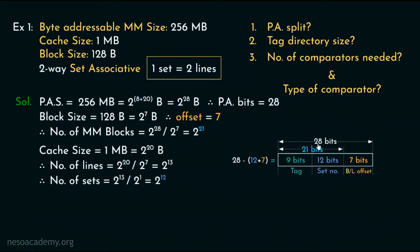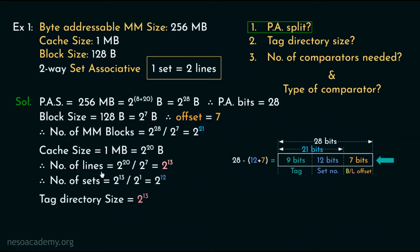From the 28-bit physical address: 7 least significant bits are used for block or line offset, 12 bits for set number, and 9 bits for the tag — that is the physical address split. For the tag directory size, there are 2 to the power 13 entries with each tag being 9 bits, so 2 to the power 13 multiplied by 9 bits gives us 73,728 bits.